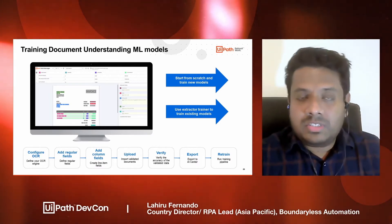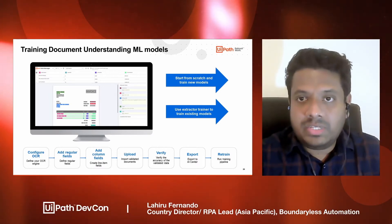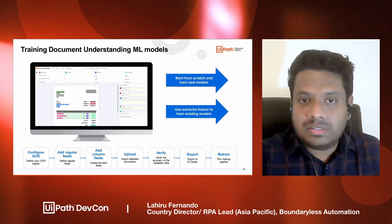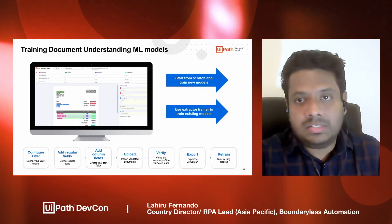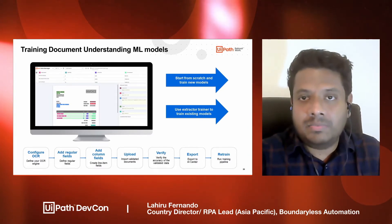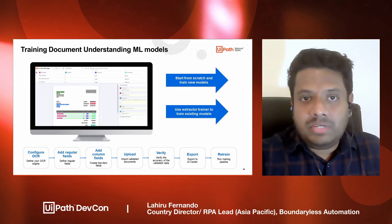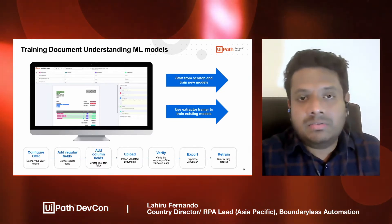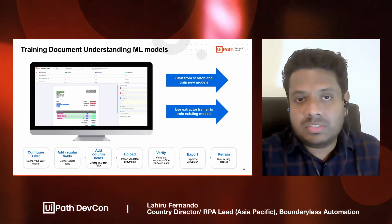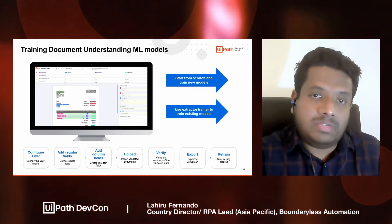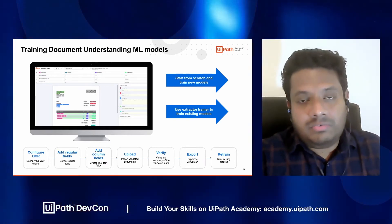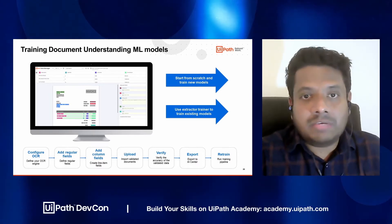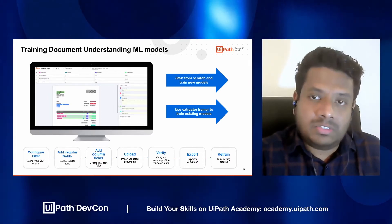For us to use a machine learning module, we need to specify what kind of fields we need to extract, what are the data types, and from where to find it. Usually, we use machine learning modules when we have a semi-structured document that has a variety of layouts and different ways of representing the same information, just like what we see in different invoices.